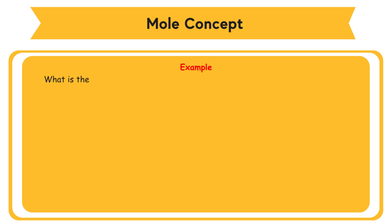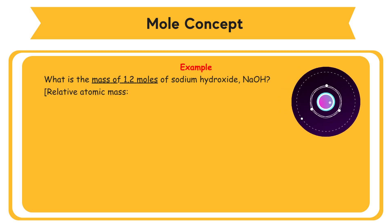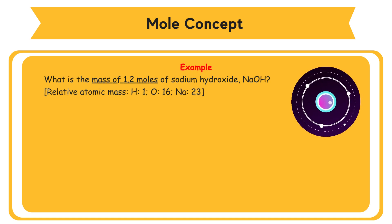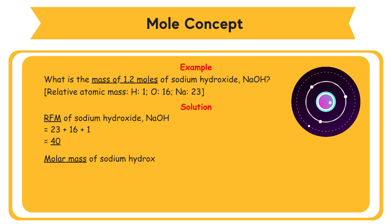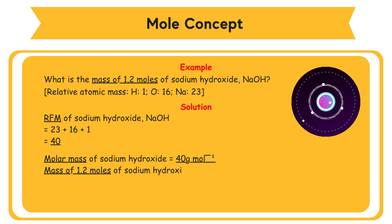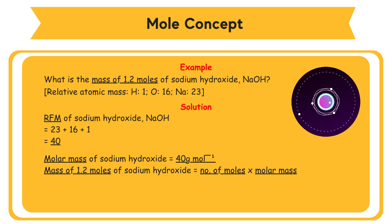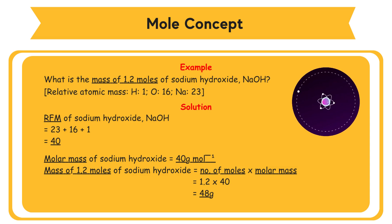Example: What is the mass of 1.2 moles of sodium hydroxide, NaOH? Relative atomic mass: H = 1, O = 16, Na = 23. Solution: Relative formula mass of NaOH = 23 + 16 + 1 = 40, so the molar mass of NaOH = 40 g/mol. The mass of 1.2 moles of NaOH = number of moles × molar mass = 1.2 × 40 = 48 grams.